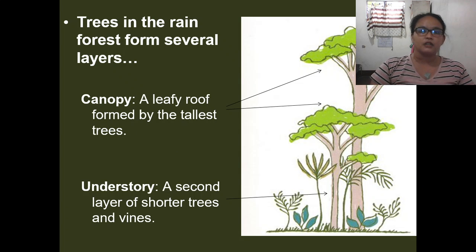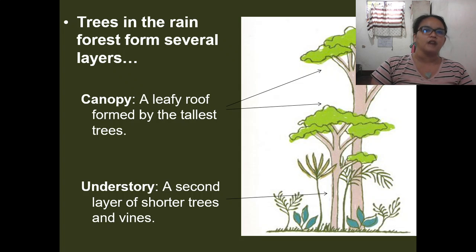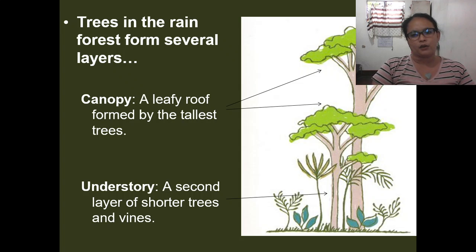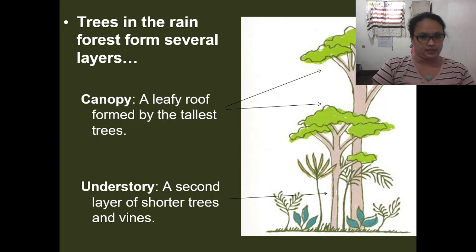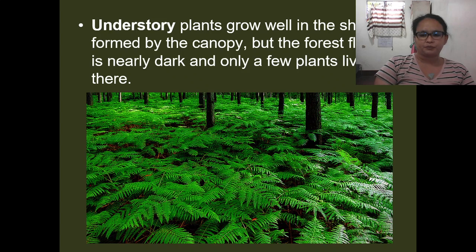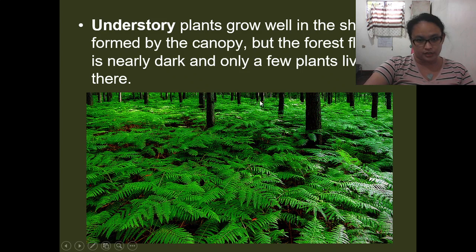Rainforests are very thick with vegetation and have many layers of trees. The first is the tallest trees, which form a leafy roof called the canopy. The understory is the second layer made up of shorter trees, vines, and smaller plants. Plants grow well in the shade formed by the canopy, but the forest floor is nearly dark and only a few plants live there.